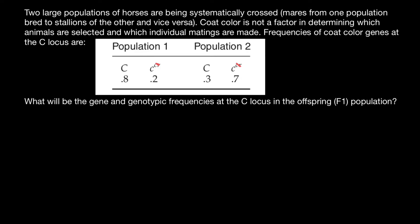So if we cross these two populations, what new frequency of these two alleles do we expect in the F1 generation? In order to solve this problem, we are going to use a simple Punnett square. Population one would be here and population two here on the top. We have two alleles — dominant allele C and recessive allele c in population one, and also dominant allele C and recessive allele c in population two.